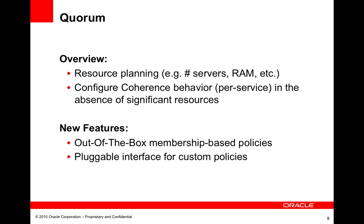Now what happens when we lose three or four of these machines at a time? How is Coherence going to behave in that scenario? Do we still have the proper amount of resources to handle the load coming from the application? So what we really have in Quorum is the ability to configure Coherence both on a service and on a cluster level basis to look at how the services are going to behave when these resources aren't present.